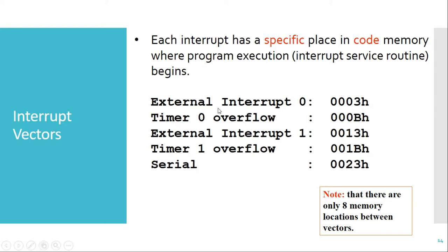In the 8051 we have five different interrupts. External interrupt 0 has vector address 0003H. Timer 0 overflow has vector address 000BH. Timer 1 overflow has vector address 001BH. And finally the serial interrupt has vector address 0023H. All these vector addresses are in program memory and are unique for every interrupt.